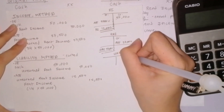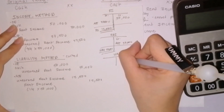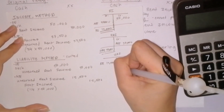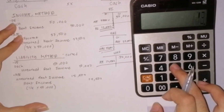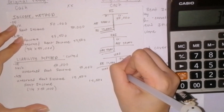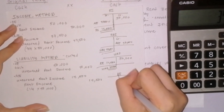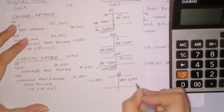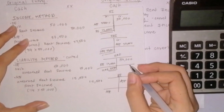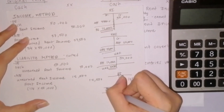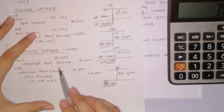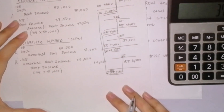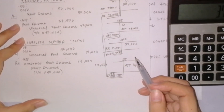Under the liability method for unearned rent income: upon receipt, we credited 50,000; in the adjusting entry, we debited 12,500. So, 50,000 less 12,500 equals 37,500 ending balance. Total debit equals total credit — 50,000 each. For rent income, we recorded a credit of 12,500 in the adjusting entry, so the ending balance is 12,500. Comparing both methods: rent income equals 12,500 and unearned rent income equals 37,500 — the same under both methods. This proves that regardless of the method, we arrive at the same balances.